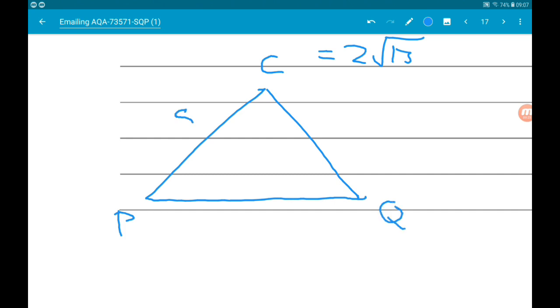Now we know these two lengths are 8 and we know the height is 2 root 13. So what we can now do is use Pythagoras to work out half the length of PQ.